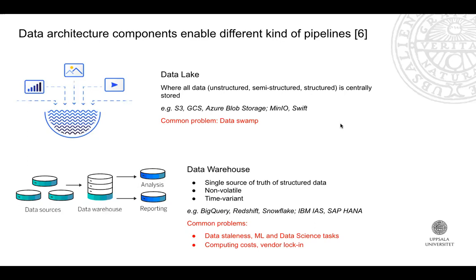This is an old problem. The most common solution in industry since the end of the 80s is data warehouses, where you have a central source of structured information, connected to different data sources. The data is non-volatile — it shouldn't be replaced or deleted, should be accessible and time-variant so you can query previous versions. Now many solutions connect these two components. However, there are problems: data staleness from replication, and machine learning practitioners sometimes need access to raw data, which adds complexity and computing costs, plus usually vendor lock-in.